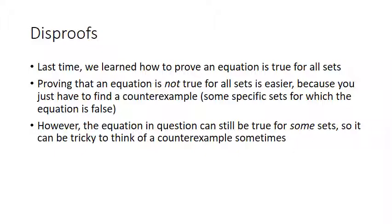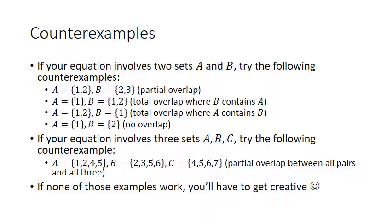Here are some suggestions for things you can try as counterexamples. If your equation involves two sets A and B, there are basically four different ways A and B could overlap. First, try a partial overlap — for example, A = {1,2} and B = {2,3}. If that's not a counterexample, try a total overlap where B contains A. Then try the other way around where A contains B. And if none of those work, try A and B being completely separate with no overlap at all.